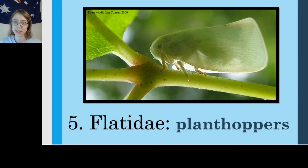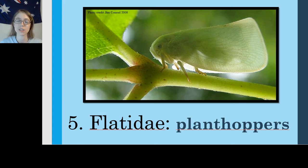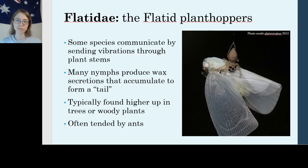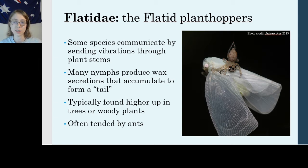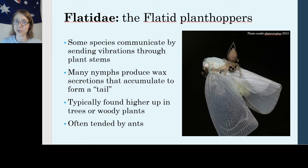Moving on to our fifth family, Flatidae, or the plant hoppers. I included these not because they're very common, but because I think they're really neat looking. Flatidae are one of the Auchenorrhynchans that communicate by sending vibration through plant stems. While cicadas will make a strong buzzing sound loud enough to hurt your ears, flatids produce vibrations you can't hear — tiny vibrations sent through a plant stem to another insect on a different part of that plant. It's like they've got their own little telephone line in the plant.